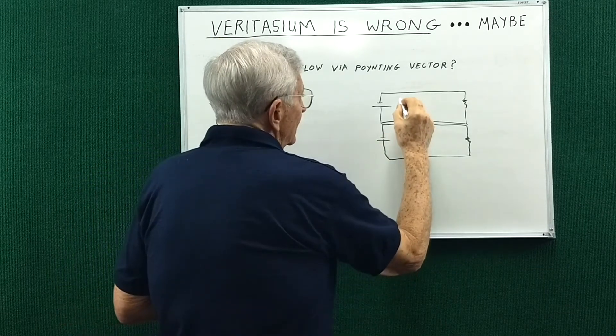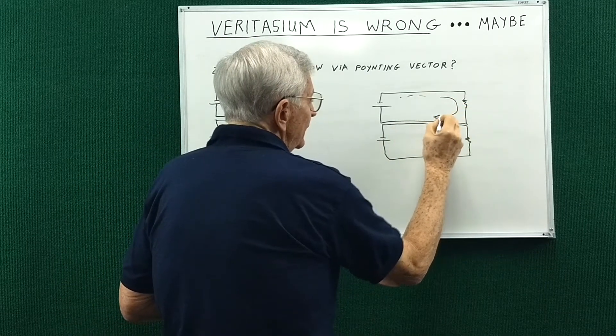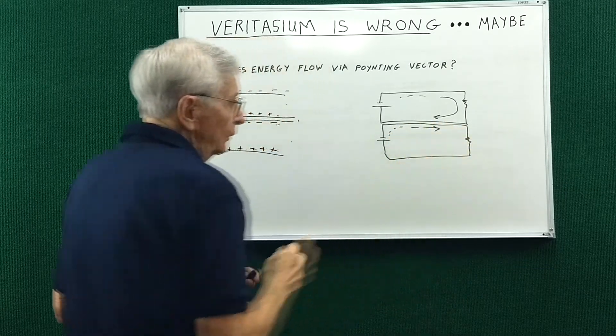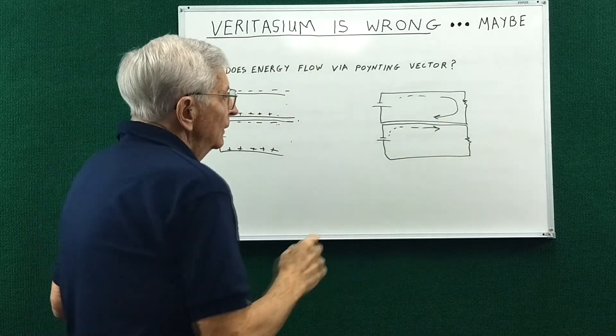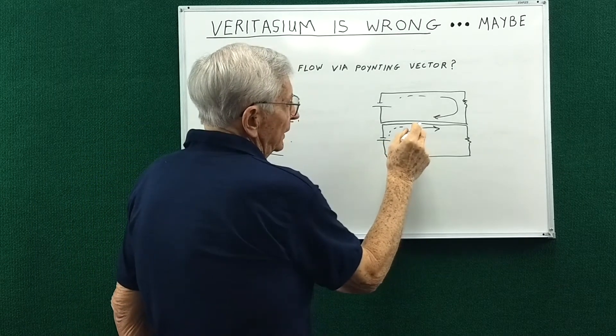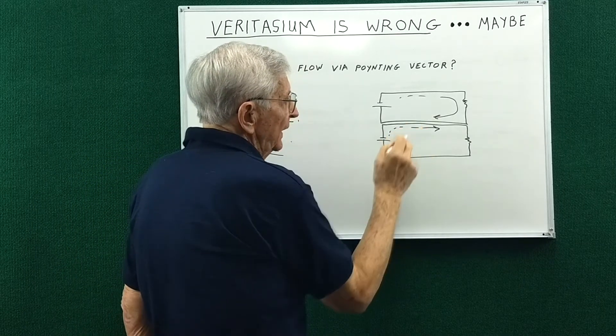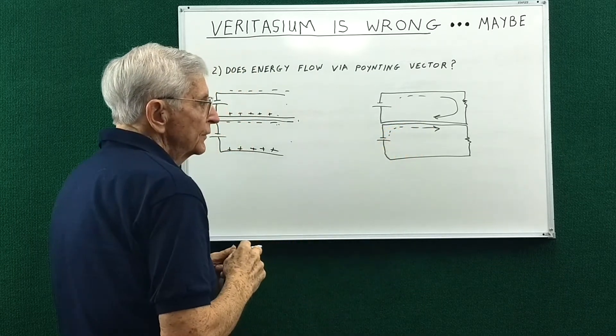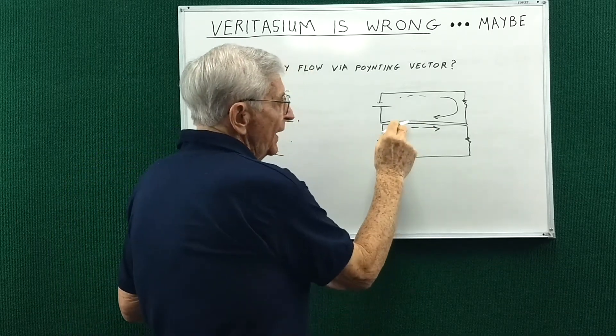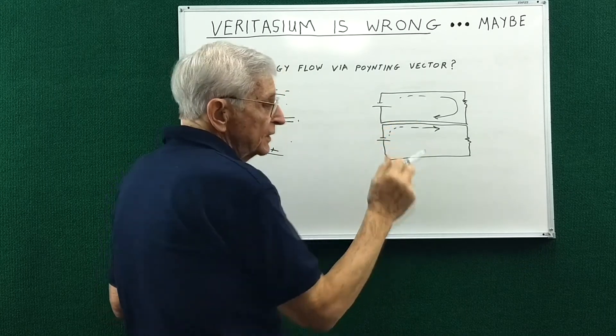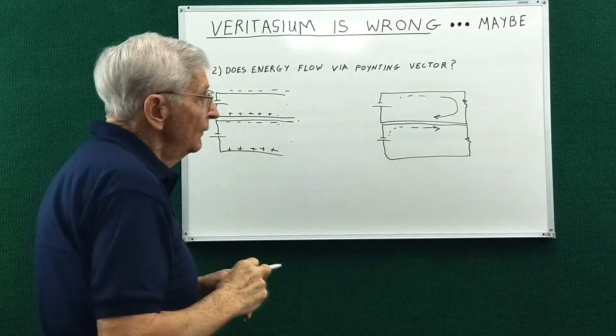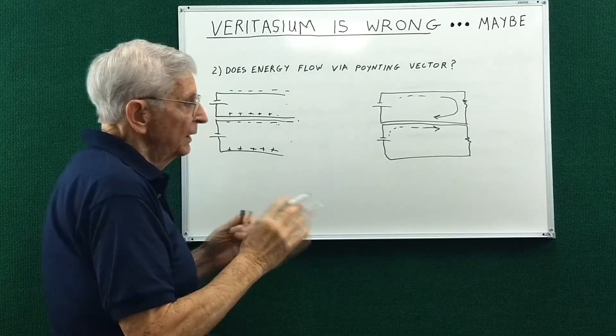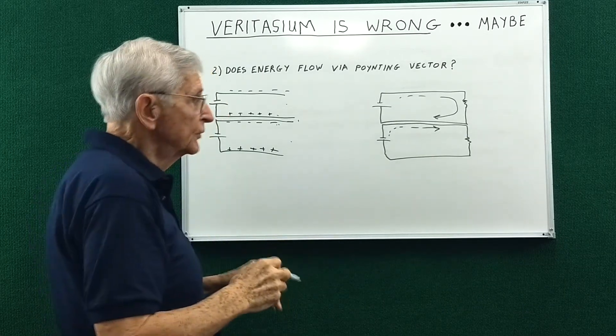Okay, we got electrons flowing around here, and we got electrons flowing around that loop. So in close proximity to those two wires, there would be magnetic fields. But at a distance from them, the currents would be in opposite direction, so the fields would cancel.